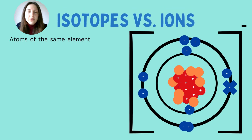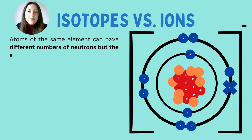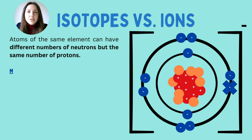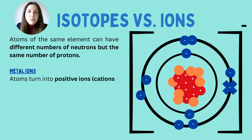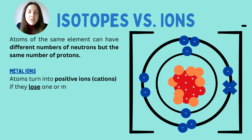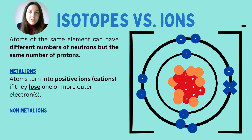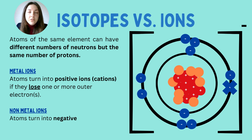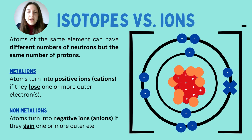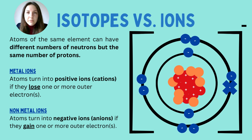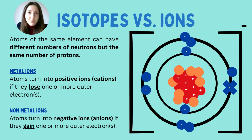Some students confuse the word isotope with ion, so it's important to know the difference. An isotope is just a different version of an atom with different numbers of neutrons but the same number of protons and electrons. An ion is a charged particle — a metal ion can be positively charged, called a cation, because it has lost an electron. A non-metal ion has gained an electron, becoming more negative, and this is all to do with stability through ionic bonding.